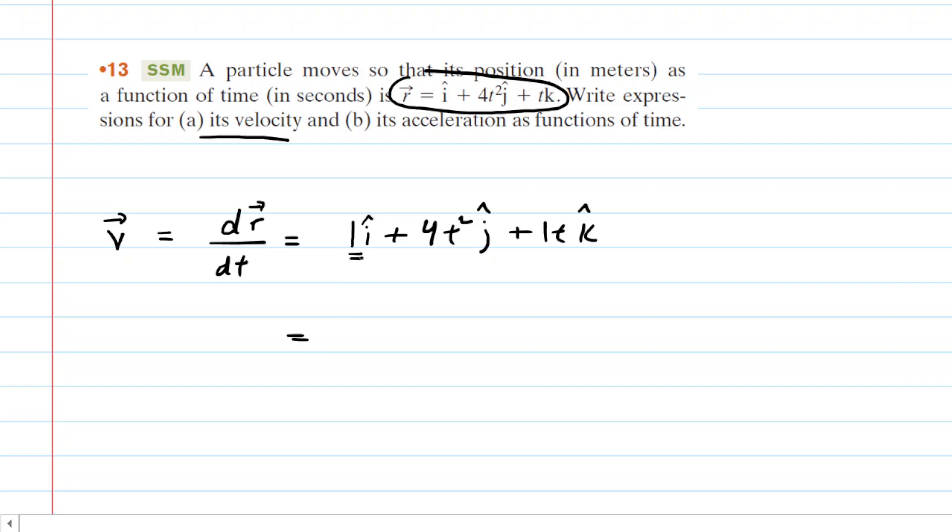Now the derivative of a constant such as 1 is 0, so we have 0 i-hat. And then for the j-hat direction, we're going to have to use the power rule. We're going to multiply the power of 2 by 4, so that's going to give us 8, and then we're going to subtract 1 from the original power. So if we do that, we get a power of 1, and then we have j-hat. And then finally, the derivative of 1t - you may remember when you have a derivative of a constant in front of a variable such as t, then the derivative is just that constant, so it's just going to be plus 1, and then k-hat.